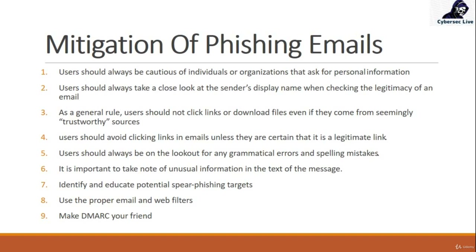Regarding URL links, you should at least check whether it is legitimate or not. Number five: users should always be on the lookout for grammatical errors and spelling mistakes. About 90% of analysts make a mistake here. For example, there may be just a single letter difference in a domain like Microsoft.com. You should have the knowledge to check carefully whether it is 'Microsoft' or a misspelled variant. Check spelling mistakes — it will help you very much.